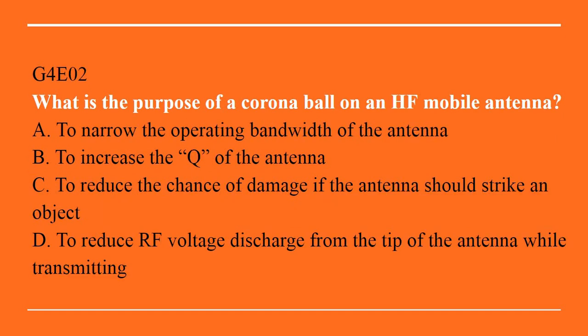G4E02: What is the purpose of a corona ball on an HF mobile antenna? A. To narrow the operating bandwidth of the antenna. B. To increase the Q of the antenna. C. To reduce the chance of damage if the antenna should strike an object. Or D. To reduce RF voltage discharge from the tip of the antenna while transmitting.